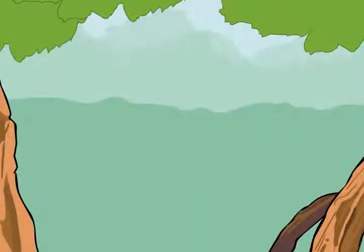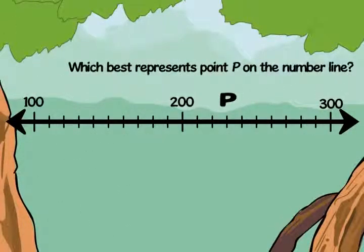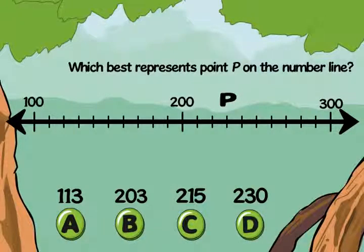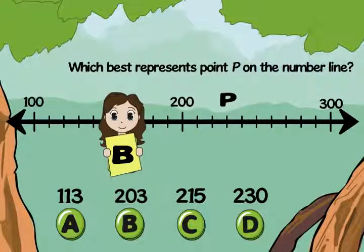Now that you know the basics, let's practice. We can solve this problem together. Which best represents point P on the number line? I think it's B. Three marks after 200 is 203. Hmm, let's see if you're right.